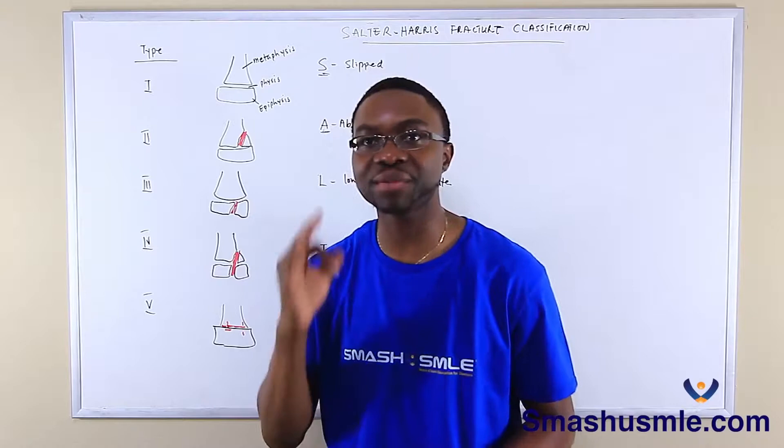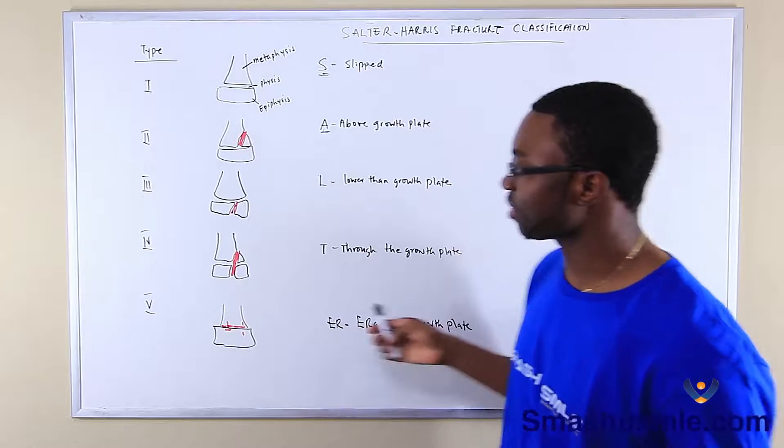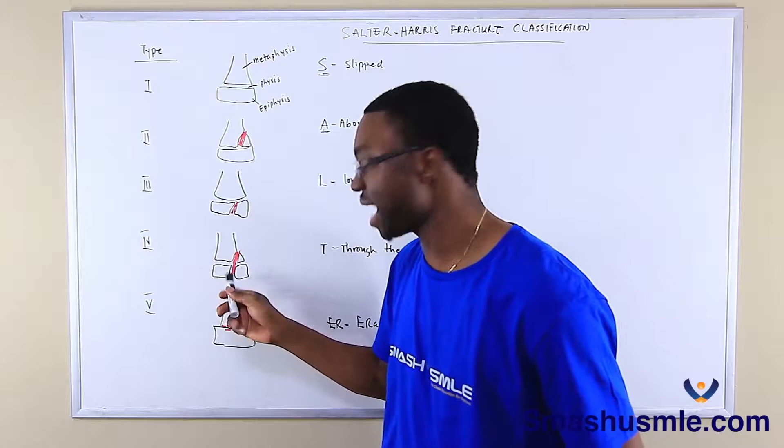Type four is through the growth plate. T is for 'through.' What we have here is a fracture that cuts across through the metaphysis, physis, and the epiphysis. That is the type four fracture.